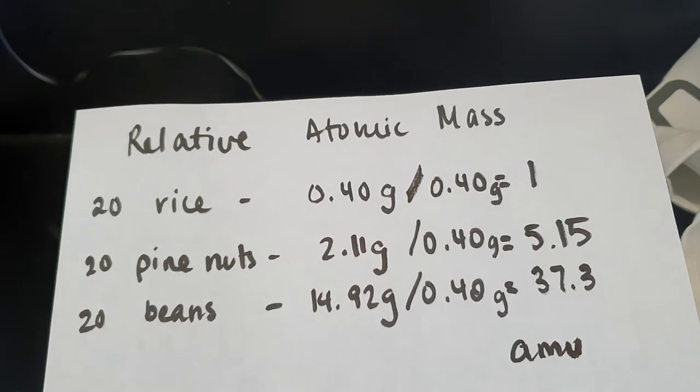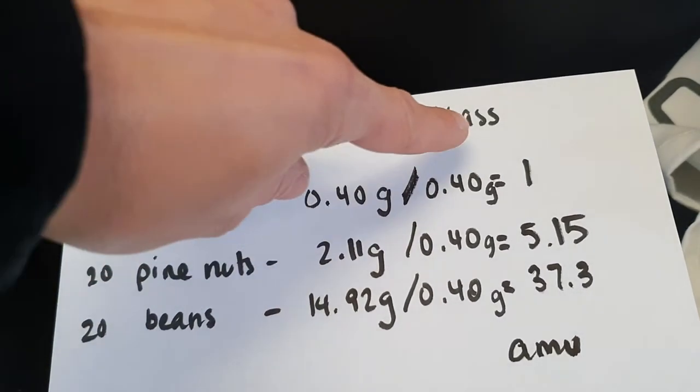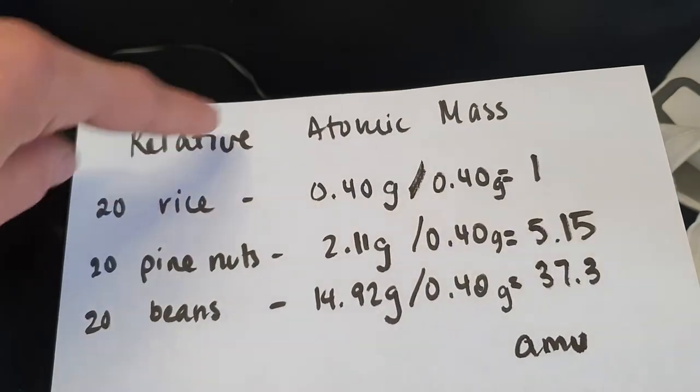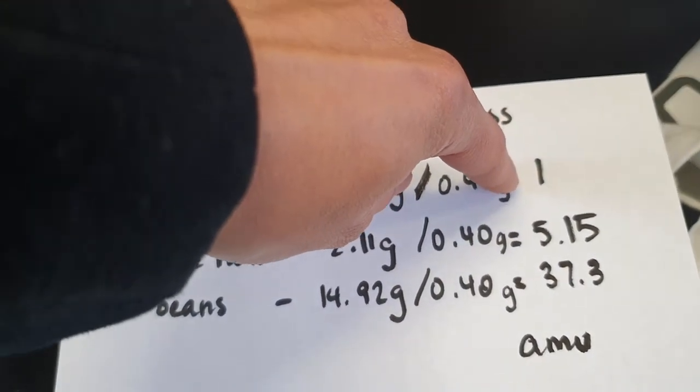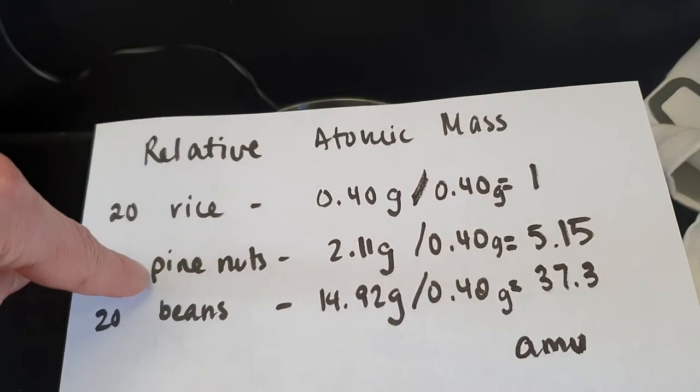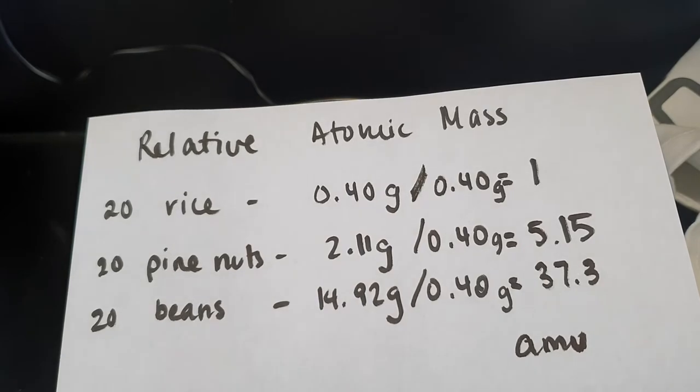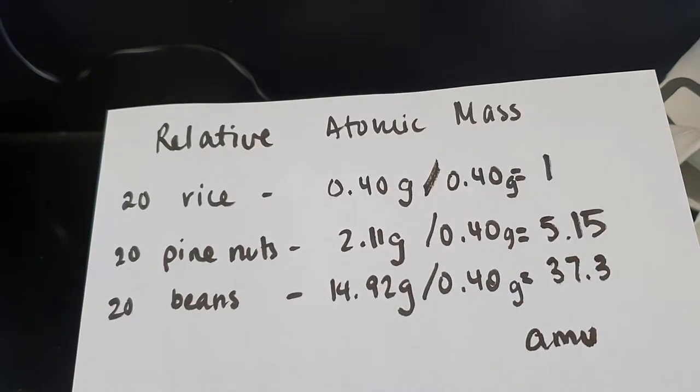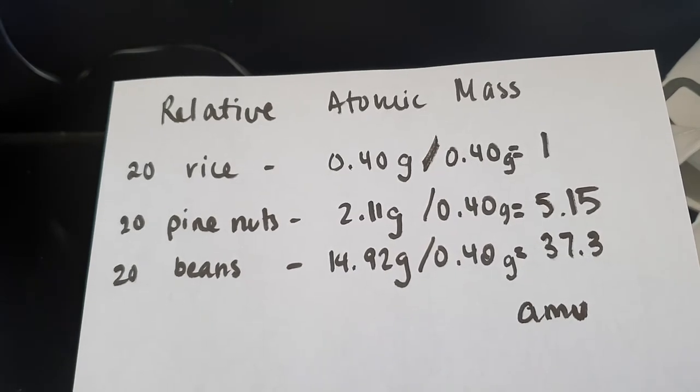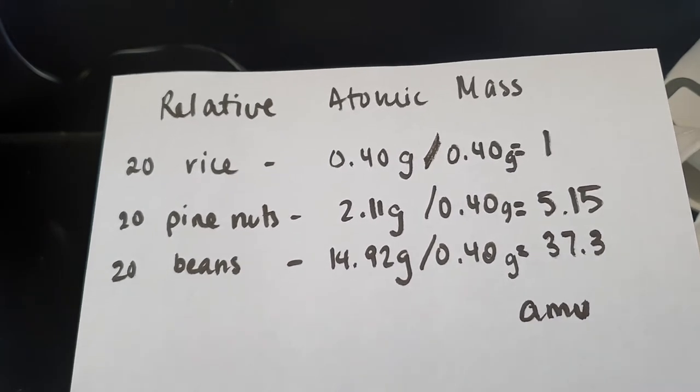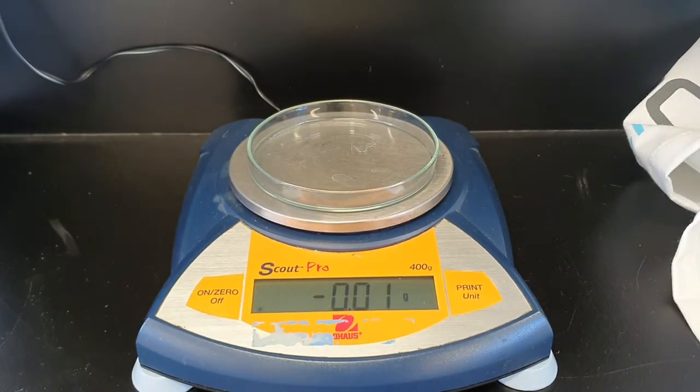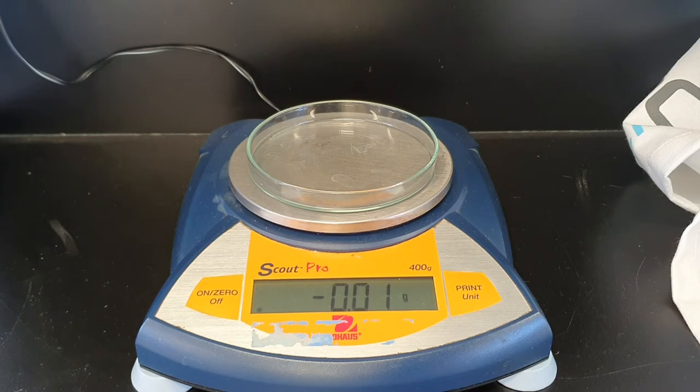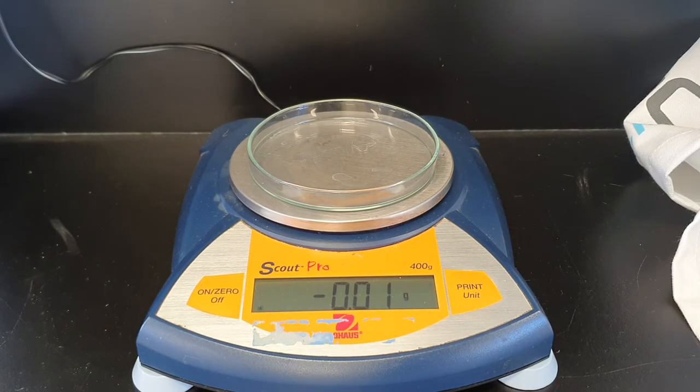So now what I'm going to do is a second step to this. What I want to know is how many particles of rice do I need to make up an atomic mass unit of one? How many pine nuts do I need to make up an atomic mass unit of 5.15? And how many beans do I need to make up an atomic mass unit of 37.3? So let's start with the rice. So what I want to know is how many will make up an atomic mass unit of 1.